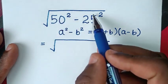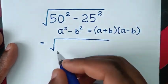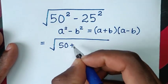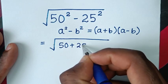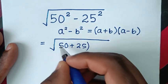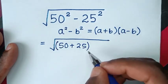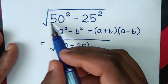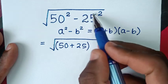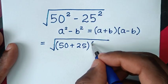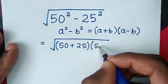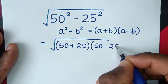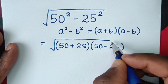For a plus b, it will be 50 plus 25 in a bracket. Then times a minus b, it will be 50 minus 25 in a bracket.